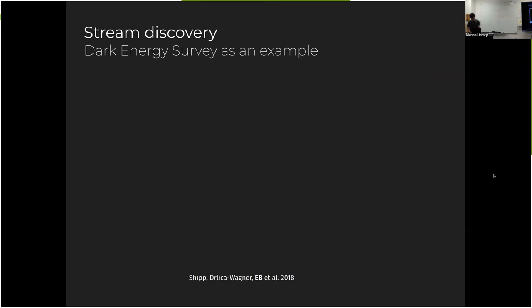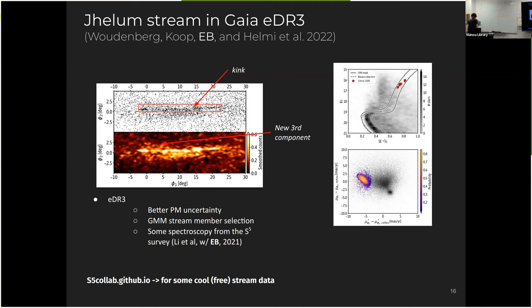However, there's always trouble. So if we go to another result now, the Jhelum stellar stream. So the Jhelum stellar stream, when it was discovered, looked like a very cold stream. And you can see here in this density map, now plotted on the sky, but on rotated coordinates to align the stream, which we call phi1 and phi2 for anyone who's in the field.